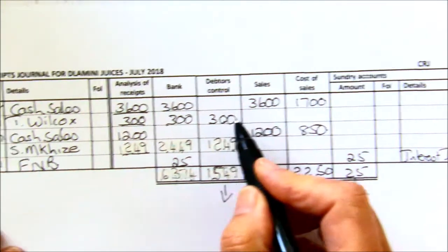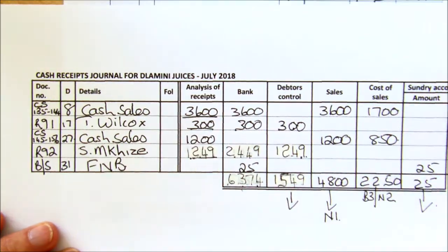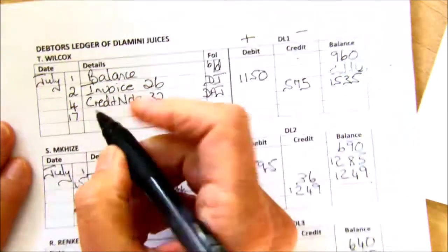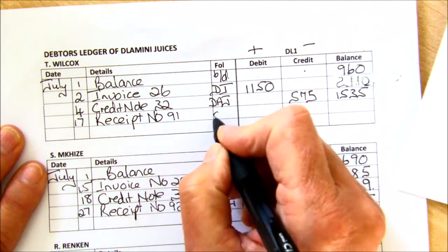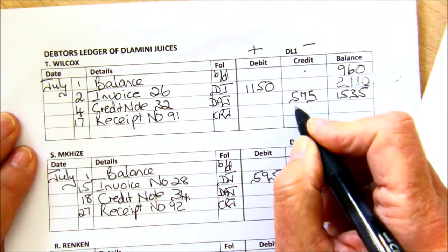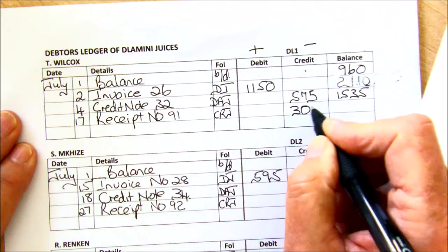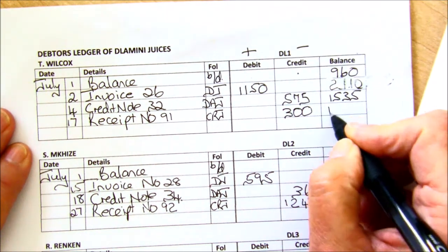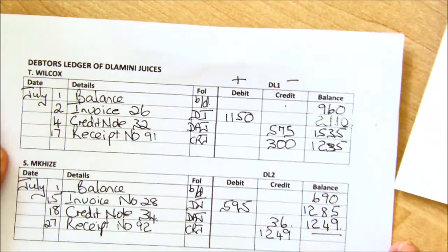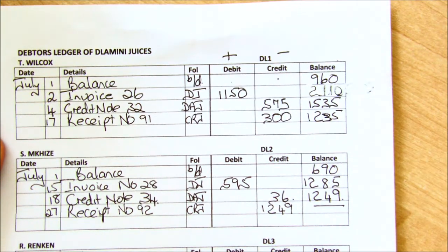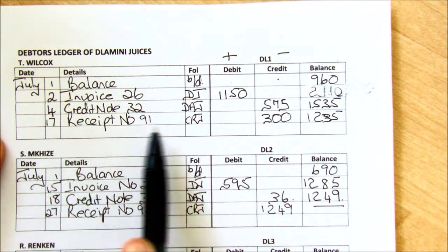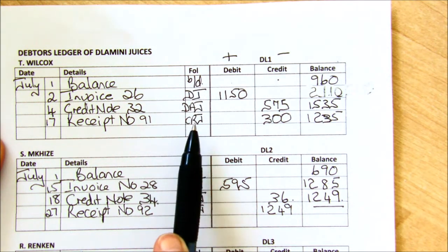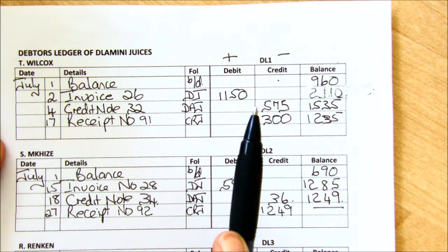Likewise, Wilcox also paid us 300 rand on the 17th. So on the 17th you're going to have your receipt number 91. This was in the cash receipts journal — he's paying the account, so he's crediting his account, and his balance goes down to 1235. You're drawing entries, bringing together the entries from the debtors' journal, the debtors' allowances, and the cash receipts journal. Remember, all three of those journals had different functions — they kept the record of all the goods sold and returned and so on. But the ledger brings all of that together so that we know exactly what each person owes us.